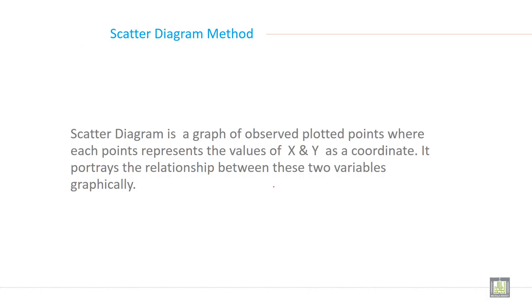Let's discuss one by one. What is a scatter diagram? A scatter diagram is a graph of observed plotted points where each point represents the values of X and Y as a coordinate. It portrays the relationship between these two variables graphically.